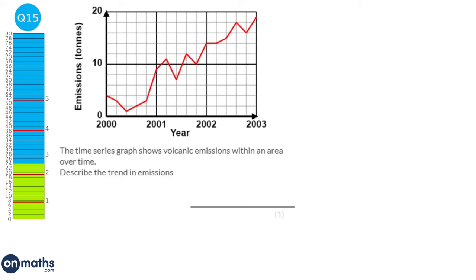When you look at this graph, it goes down at first, then starts going up, then goes down again. When looking at trends, you look at what's generally happening. If you draw a line to represent roughly where the graph is going, that line will go up. So the general trend is that it is increasing — you can write 'general increase in emissions'.